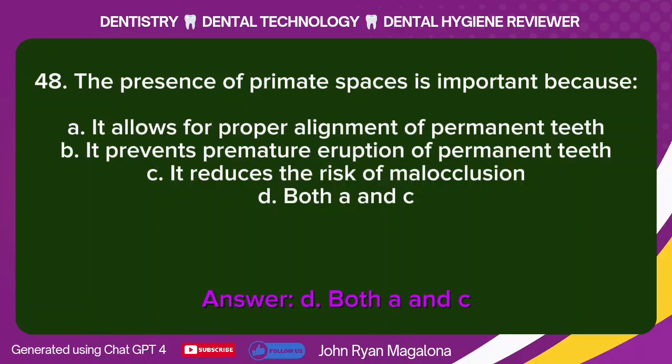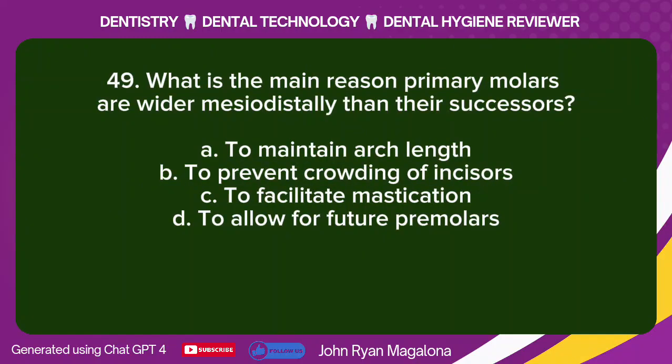Question 49: What is the main reason primary molars are wider mesiodistally than their successors? A. To maintain arch length. B. To prevent crowding of incisors. C. To facilitate mastication. D. To allow for future premolars. Answer: A. To maintain arch length.